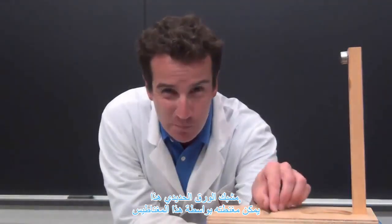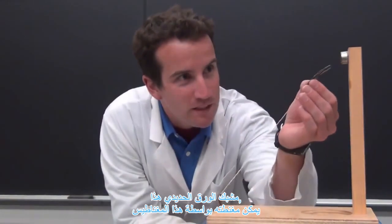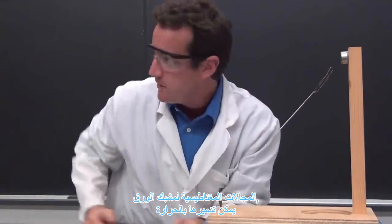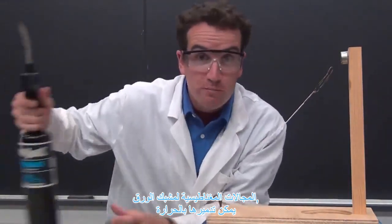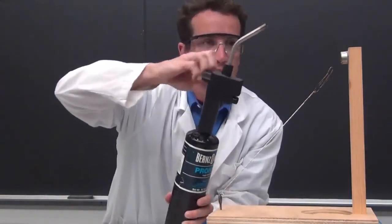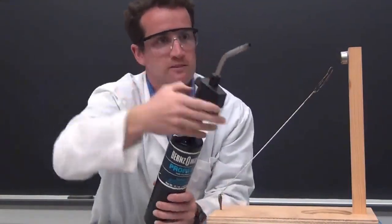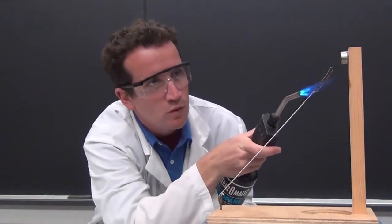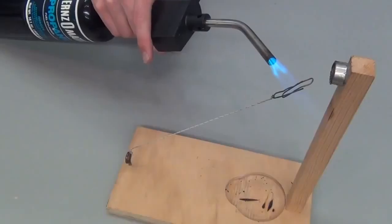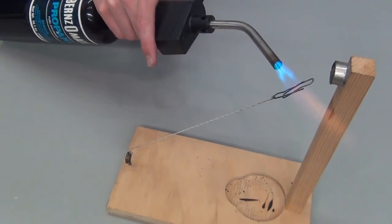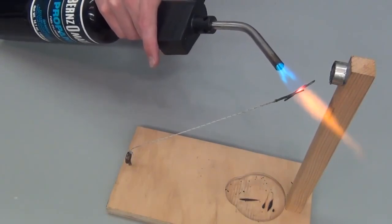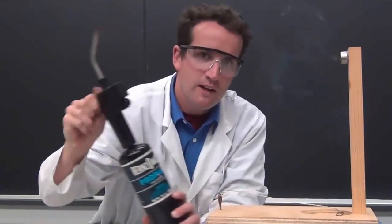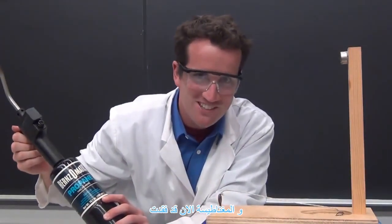This iron paperclip can be magnetized by this magnet. The magnetic domains in the paperclip can be destroyed by heating, and the magnetism is lost.